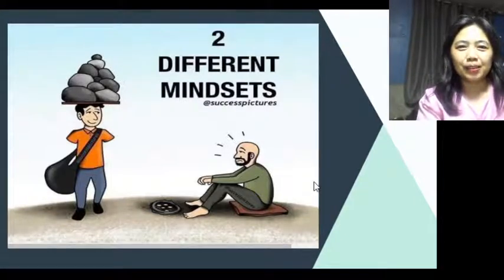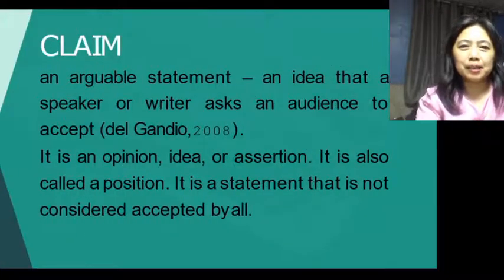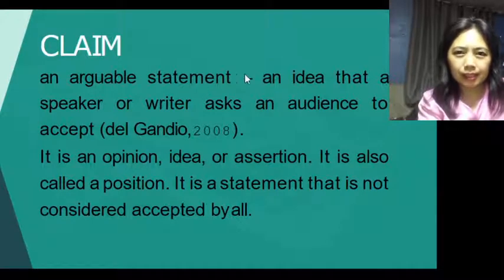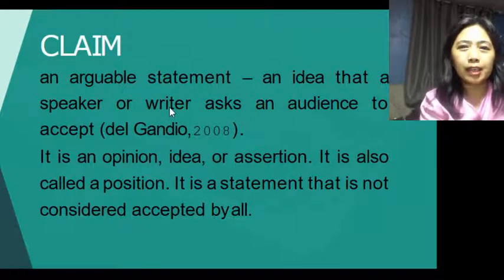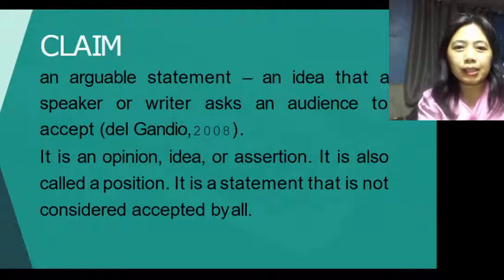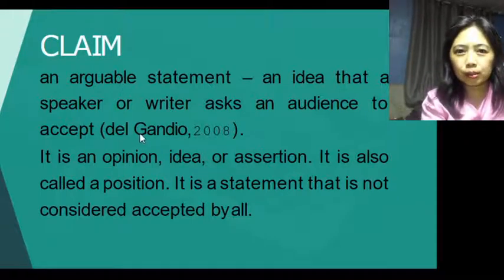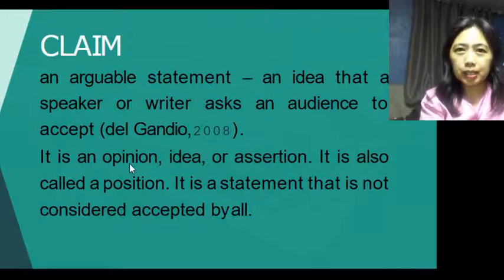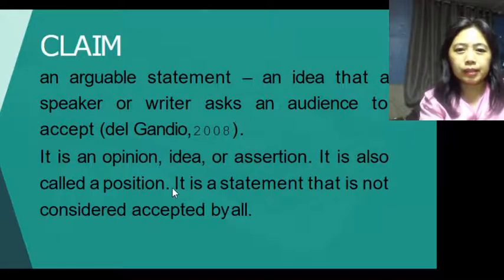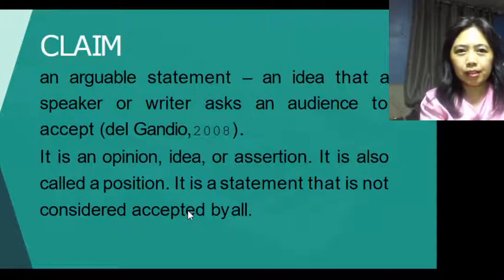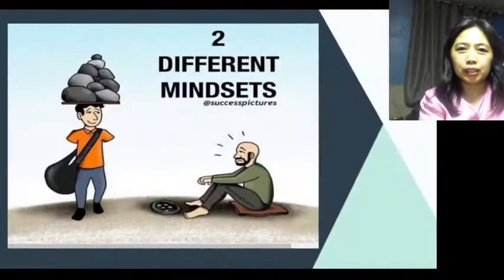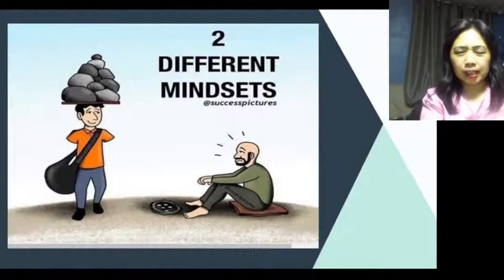So this is what we're going to discuss — the types of claims. A claim is an arguable statement. It is an idea that a speaker or writer asks an audience to accept (del Gandio, 2008). It is also an opinion, idea, or assertion. It is also called a position — a statement that is not considered accepted by all.